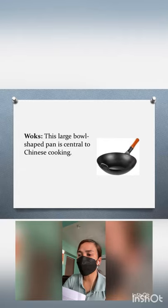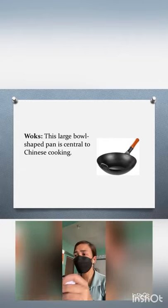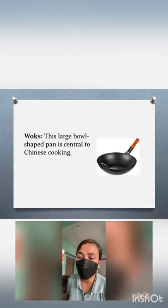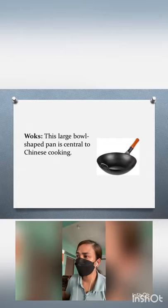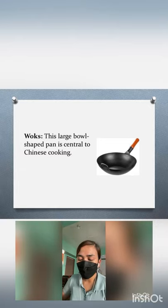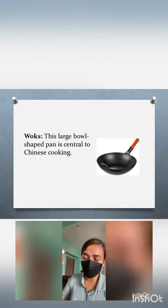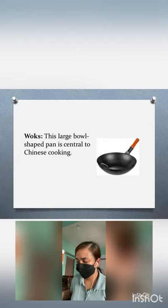Next, we have woks. A wok is a large bowl-shaped pan used in Chinese cooking, especially for stir-frying. But it has other potential uses as well — it can be used to boil foods filled with oil for deep frying, and can also be used for steaming vegetables or seafood.